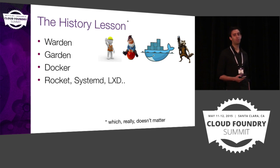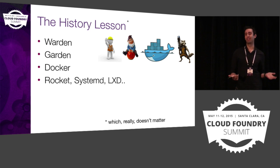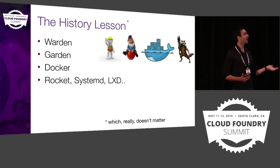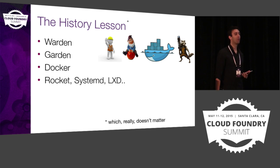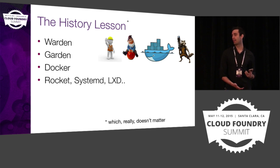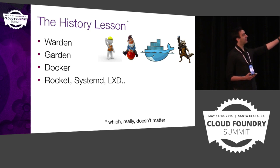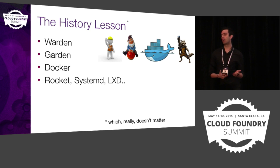I feel like I have to put in a history lesson. Warden actually predates the other two. The obvious question is why did you build Warden when Docker was out there? The answer is Docker wasn't out there, so we built Warden — and then later Docker came out. We've now rewritten Warden, rewritten a lot of the components in Go, so that's why it's called Garden. But it's actually mostly the same codebase underneath.